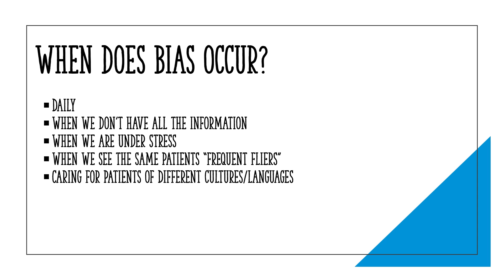Bias also can occur when we see the same patients — those frequent flyers — and this can be really dangerous in healthcare. You see the same person here with the same complaint for the fourth or fifth time in a row, and it's like, gosh, they've been here a million times for the same thing. If you're finding that you're doing that, it's probably a good idea to have a new set of eyes on that patient. If you've taken care of the same frequent flyer, give them to somebody else. You might miss something if all you're doing is looking back at the chart and saying this person's been here five times in the last week. Try and give them to another provider just so you don't miss something, because that can be kind of dangerous.